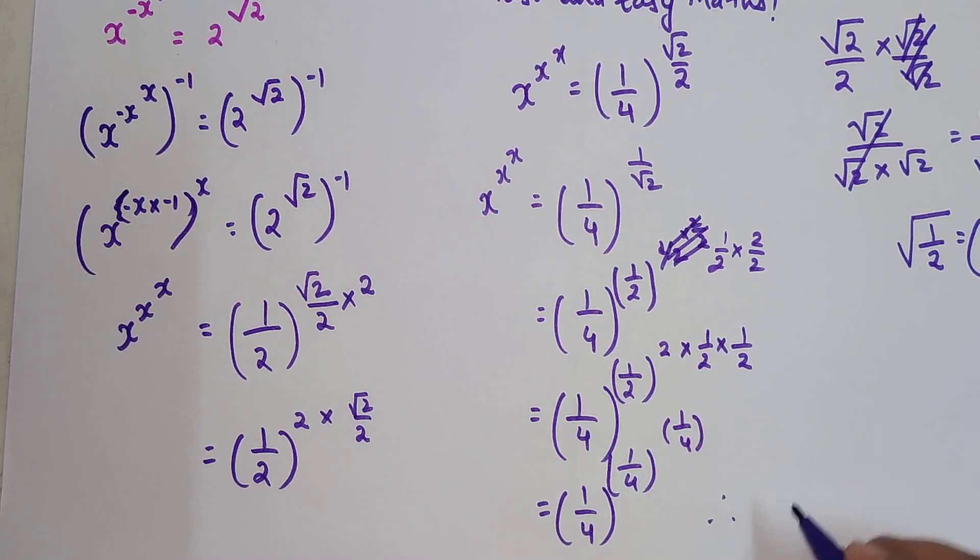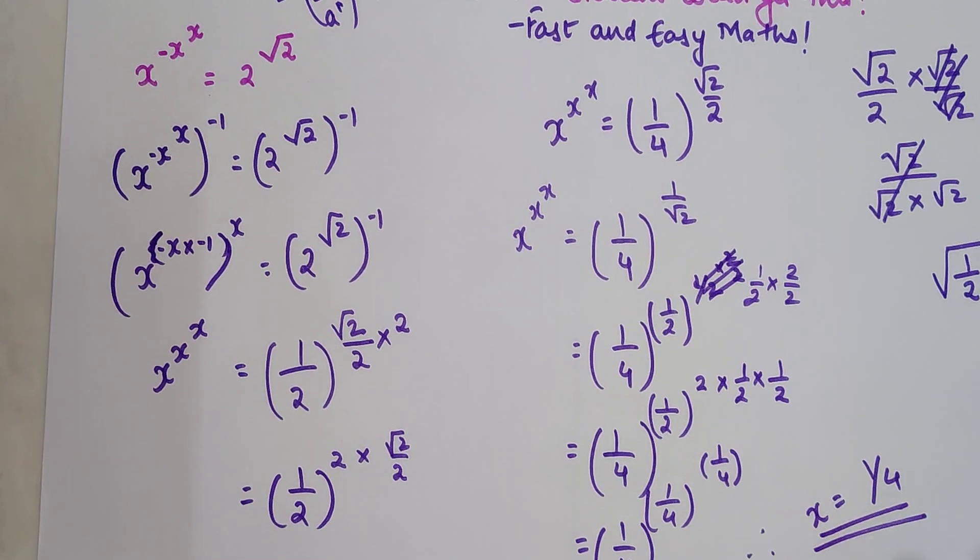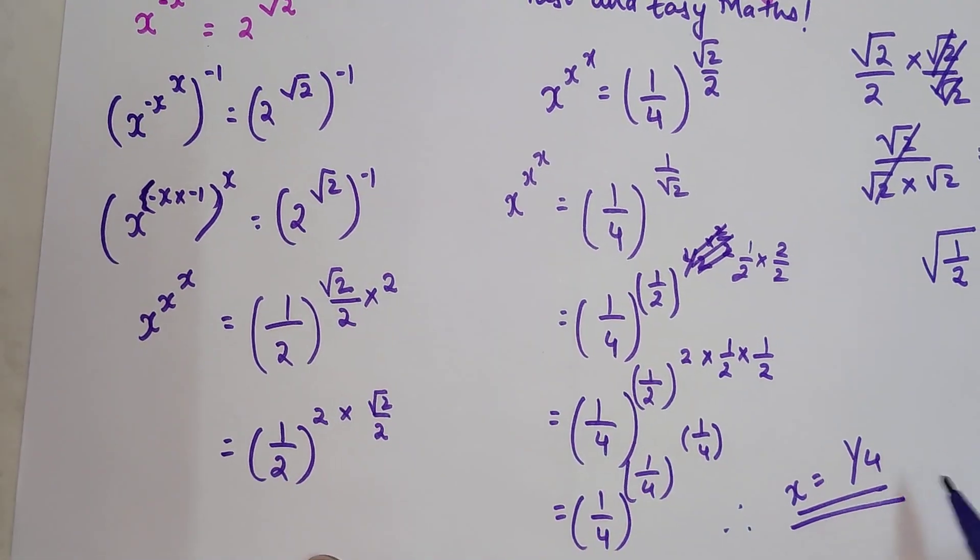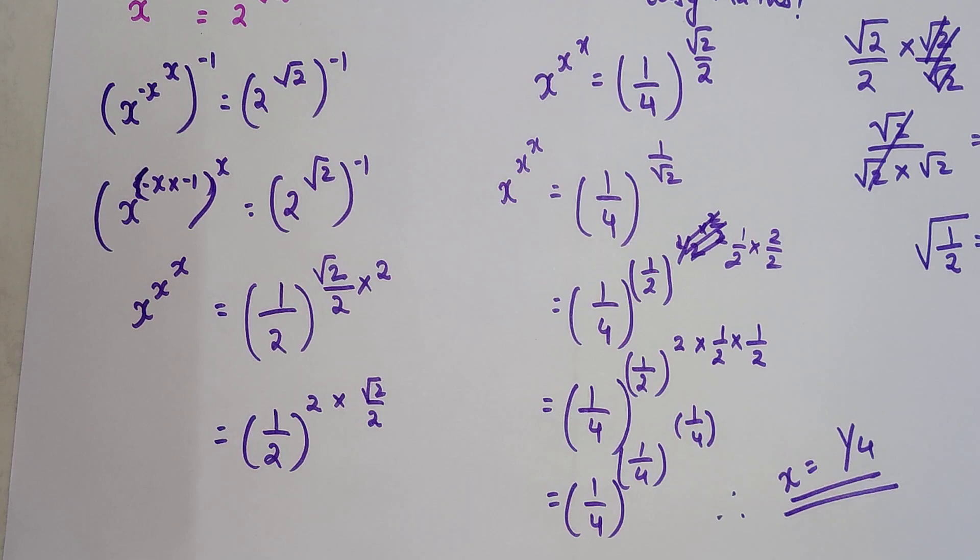So basically therefore I can say x equals 1 upon 4. You saw how difficult this question was looking, and just using simple indices laws we could solve this particular question.